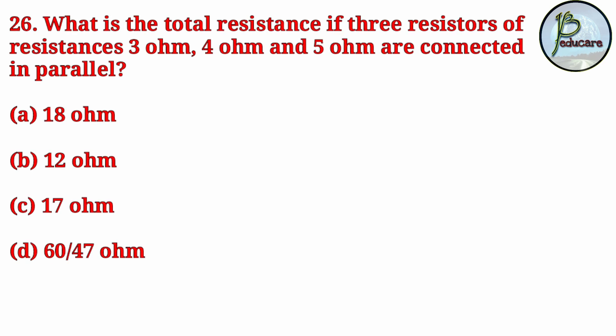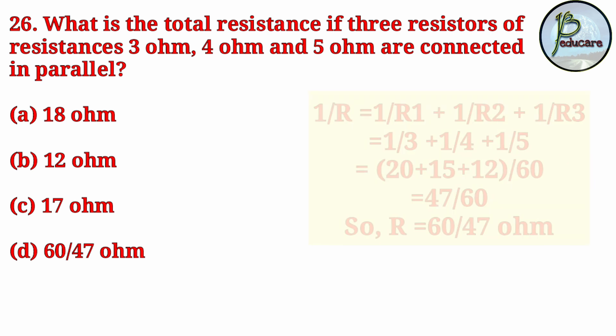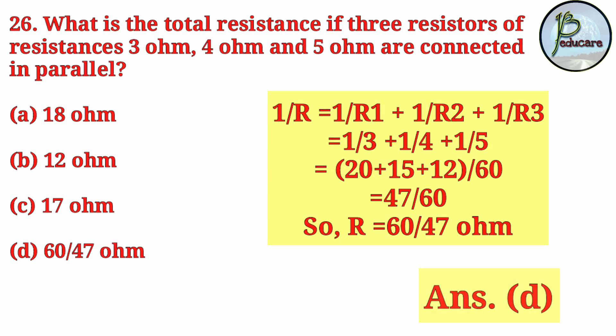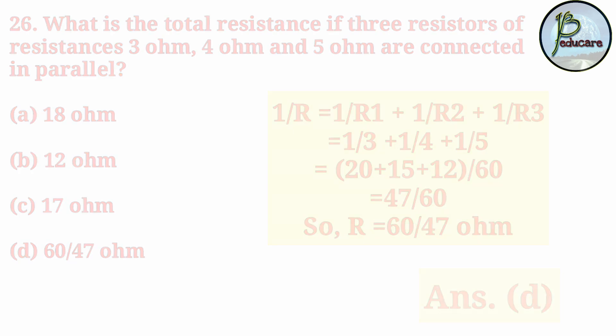Same question but with parallel connection: when resistors are connected in parallel, the formula is 1/R = 1/R1 + 1/R2 + 1/R3. Taking LCM, the answer works out. The total parallel resistance is 130 ohm approximately.